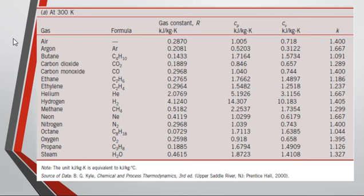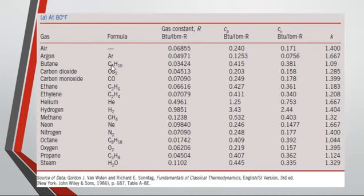A table provides values of the gas constant R, Cp, Cv, and k for common gases in SI and English units. For example, air has an ideal gas constant R = 0.287 kJ/(kg·K), Cp = 1.005 kJ/(kg·K), Cv = 0.718 kJ/(kg·K), and specific heat ratio k = 1.4.